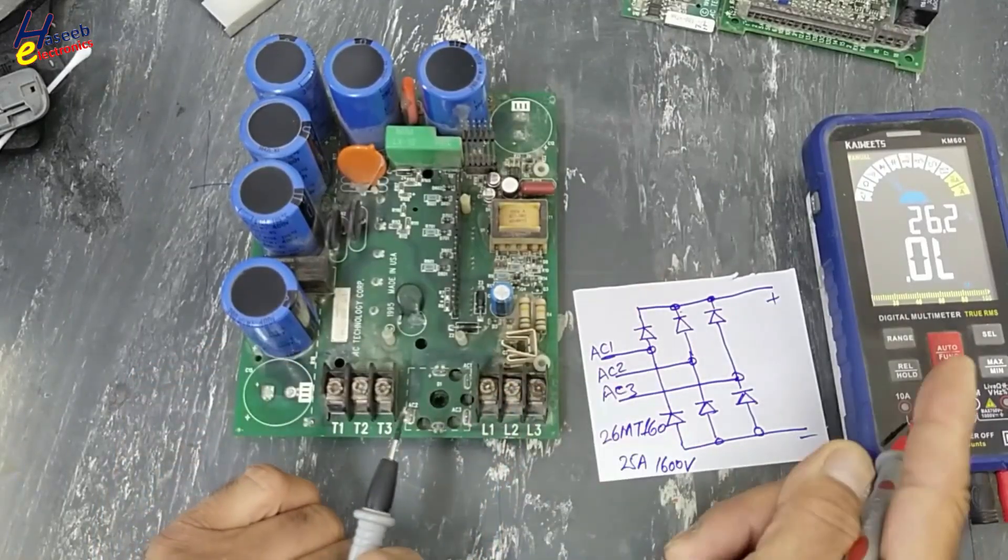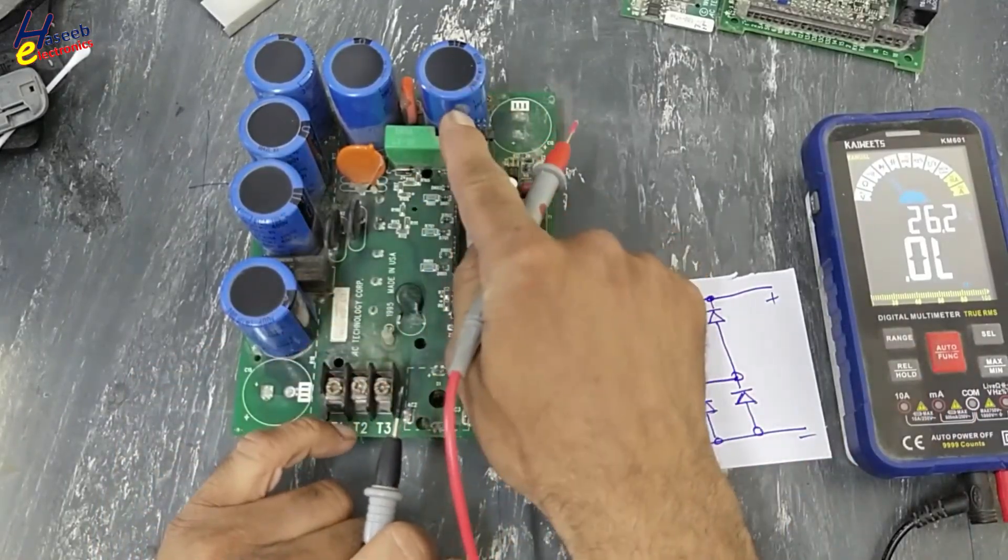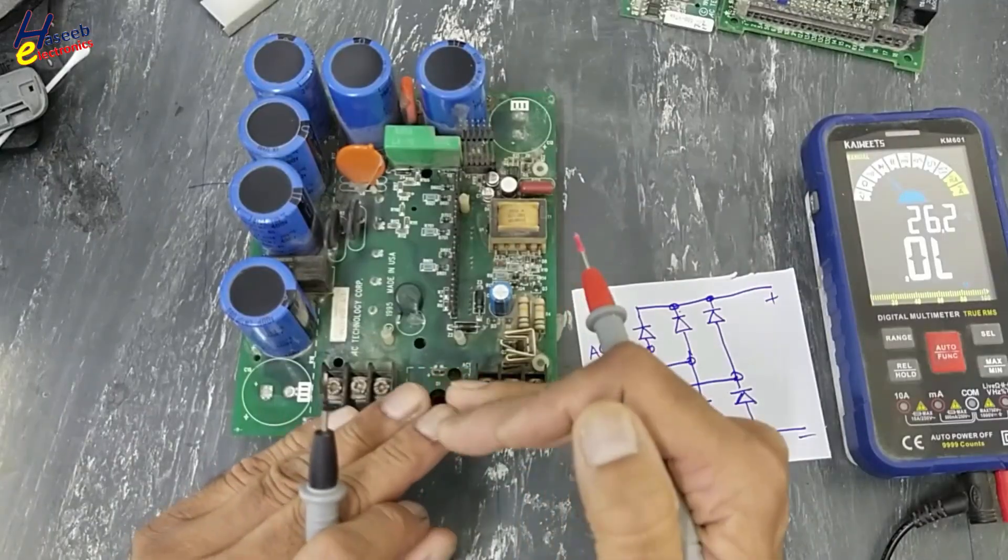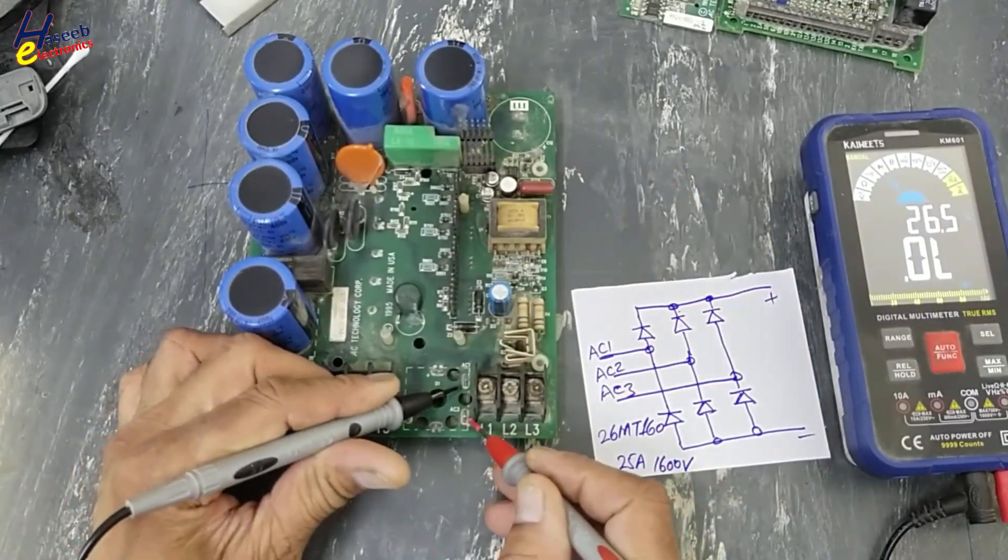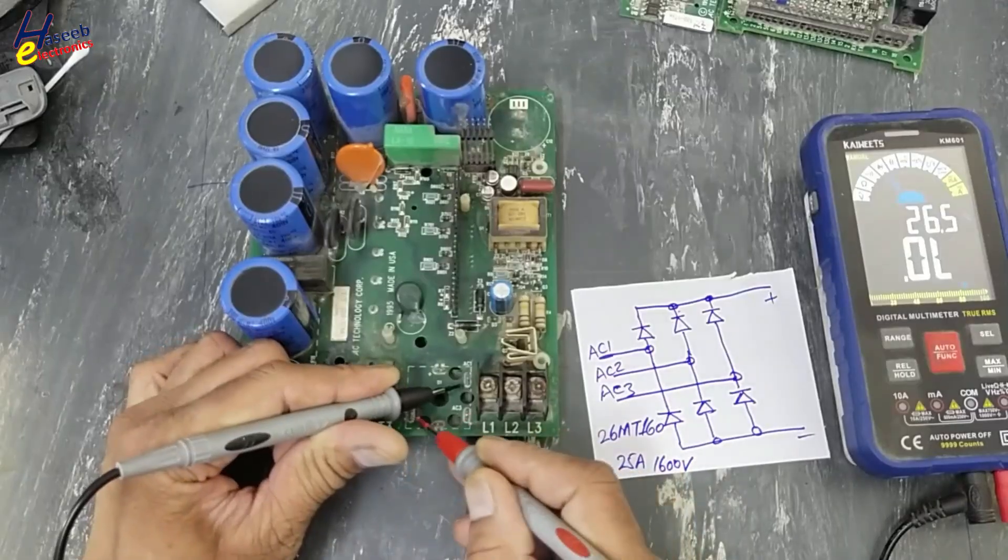That indication was due to these capacitors. Once these capacitors are charged, then it will show open circuit, OL, between all AC input terminals.